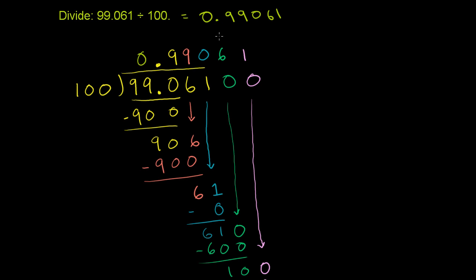And just to make the point, this actually makes sense. 99 is a little bit less than 100. So 99 divided by 100 is going to be a little bit less than 1. And this number is a little bit less than 1.